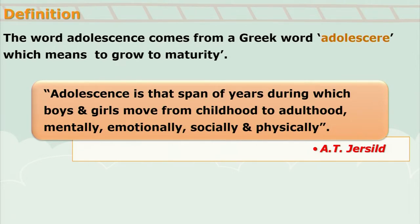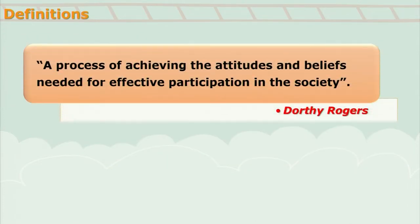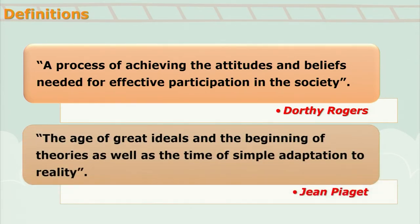Now let's have a look at another definition given by Dorothy Rogers. According to him, adolescence means a process of achieving the attitudes and beliefs needed for effective participation in the society. So it is a stage where attitudes and beliefs are formed for effective participation in the society.